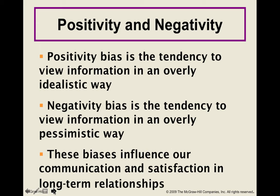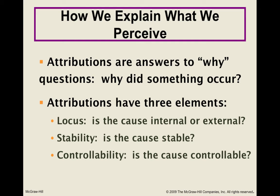We explain behavior through attributions — why did something occur? Why was my employee late for work? Attributions have three elements: locus, stability, and controllability. Locus is the location of the cause — is it internal, within that person, or external, outside their control? If it's internal, maybe my employee overslept; if external, maybe they had a flat tire. Stability: is the cause permanent or semi-permanent — something that can always or sometimes happen, like traffic always being bad in the morning? And controllability: was the cause under that person's control? We use these elements in combination to come up with an accurate explanation for behavior, but we're not always accurate.